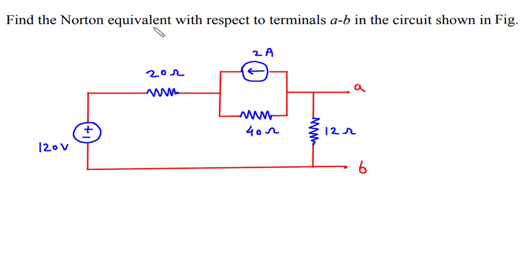Find the Norton equivalent with respect to terminals AB in the circuit shown in figure. We have to find Norton equivalent solution. First of all we will redraw the circuit.